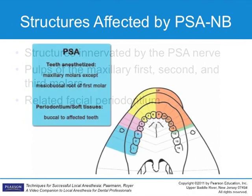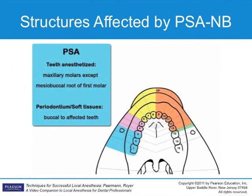In some patients, the mesial buccal root of the first molar will not be anesthetized with the PSA injection and will require an infiltration over the mesial buccal root of the first molar in addition to the PSA.